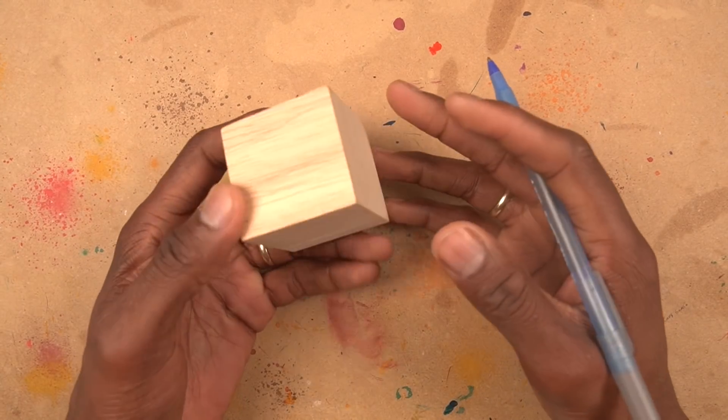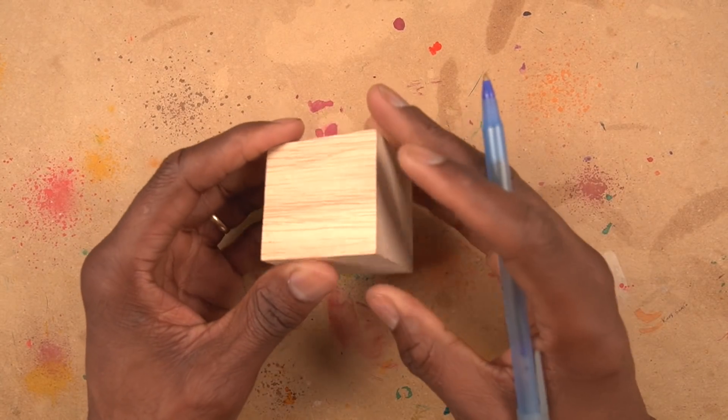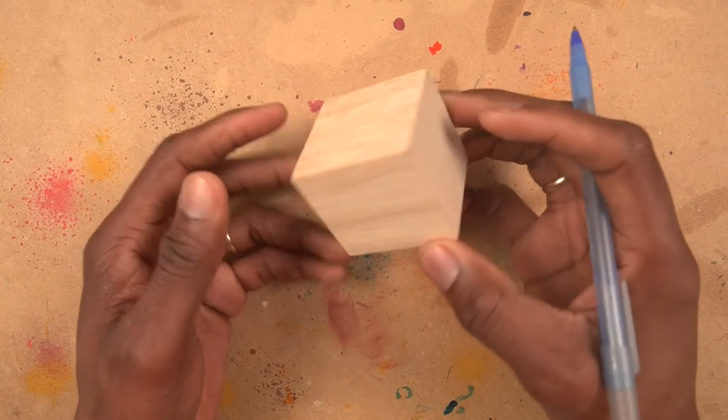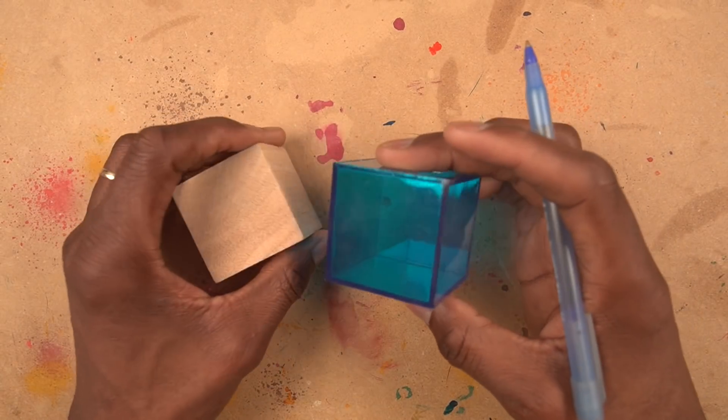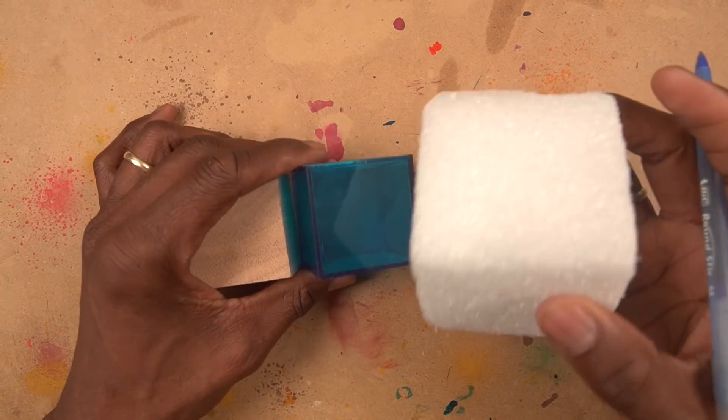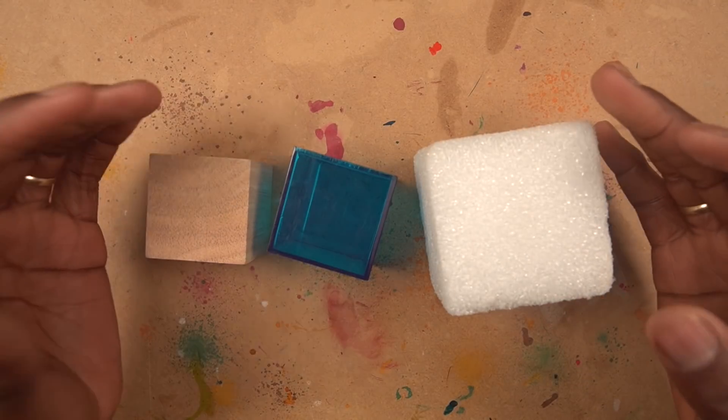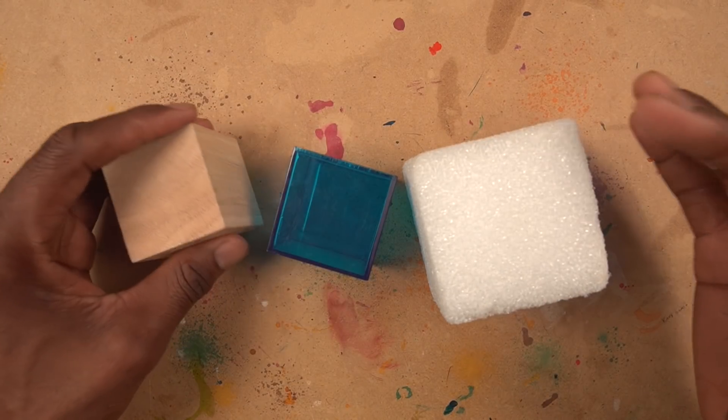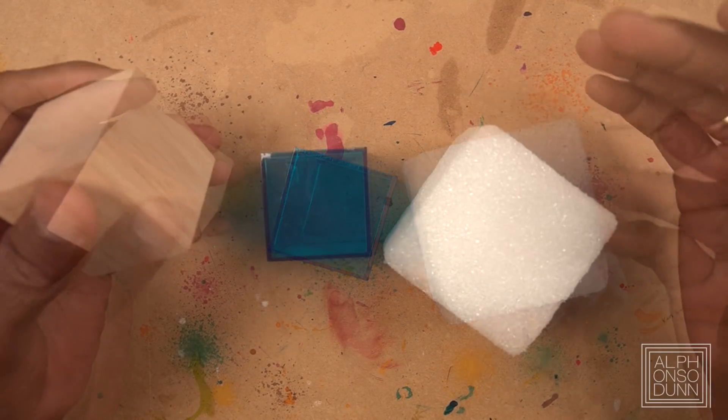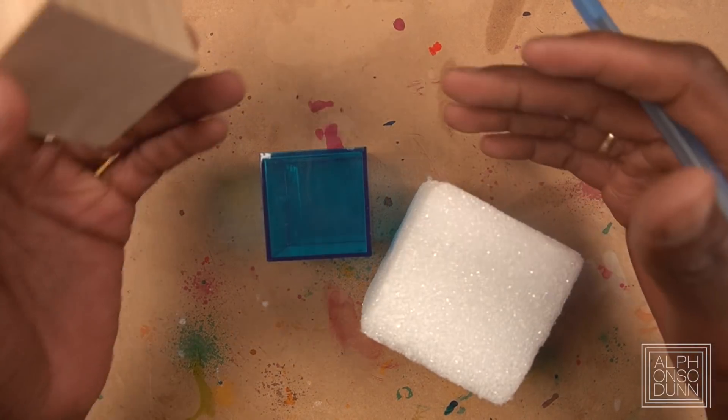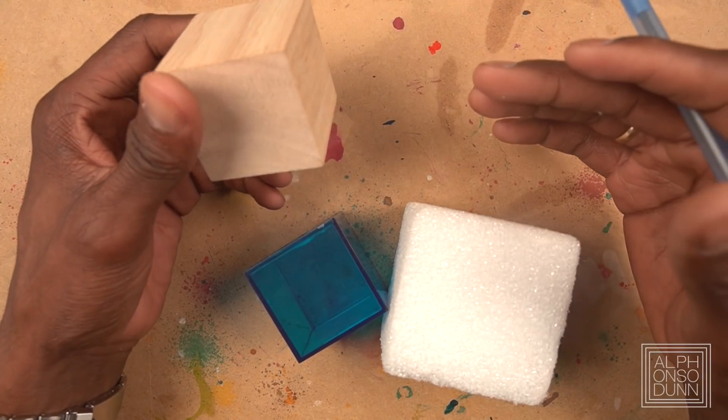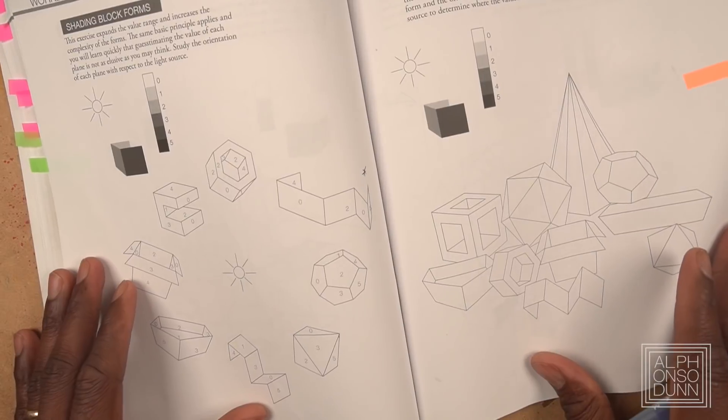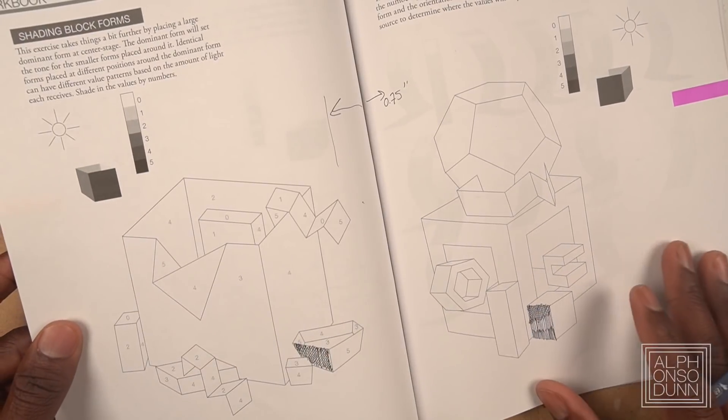The block is such an instrumental element to learning fundamentals of drawing. It helps us to understand basic structure, three-dimensional space, and core shading principles. Most organic or complex forms can be reduced in some way to block forms. Learning to render them really helps to develop a solid foundation for shading, so it was important that I included exercises on shading block forms in my workbook.